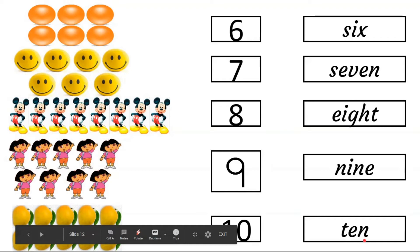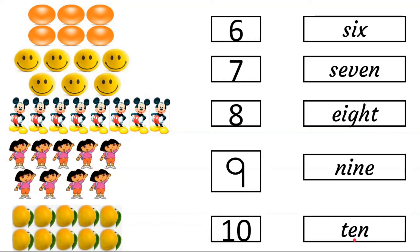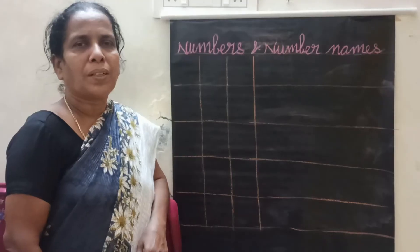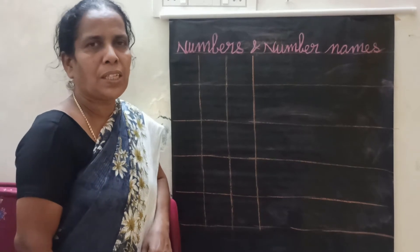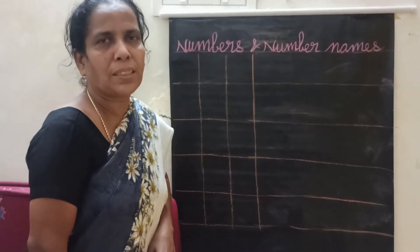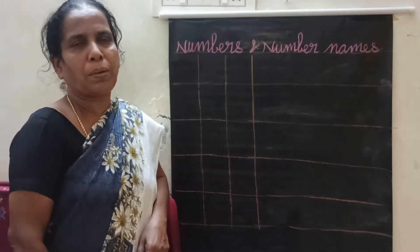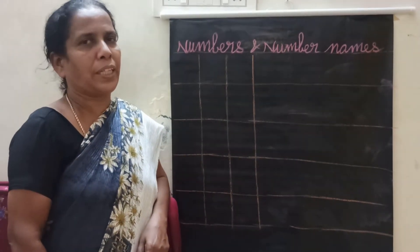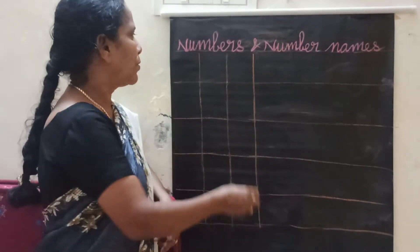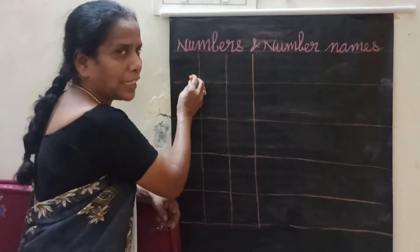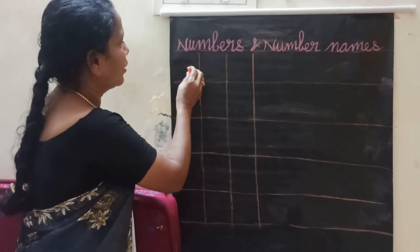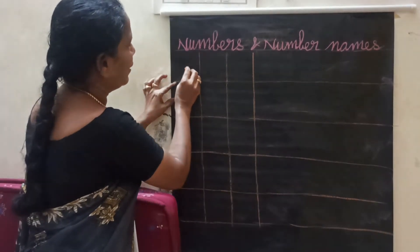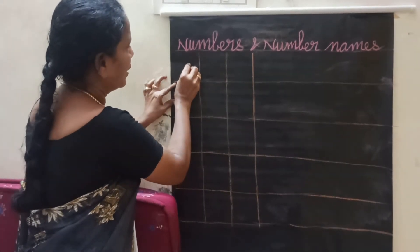Now I am going to teach you how to write numbers 6 to 10. Now we will see how to write numbers and number names 6 to 10. Okay children, get ready. Okay, get ready. Okay, 6,